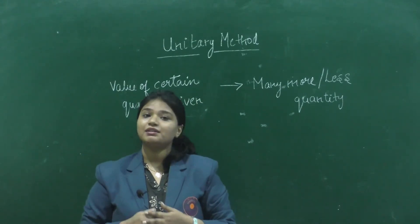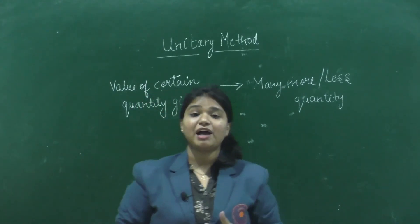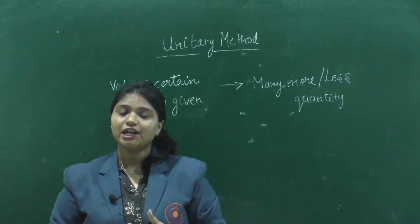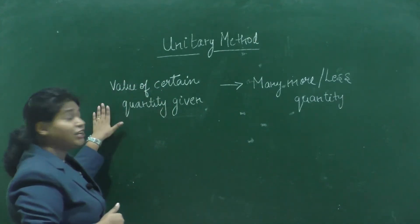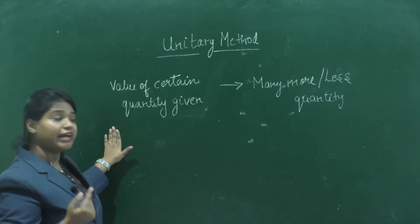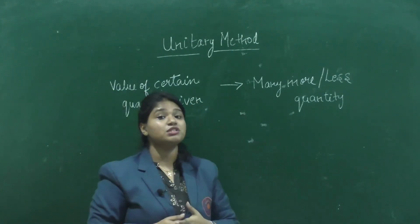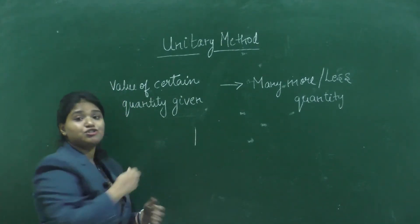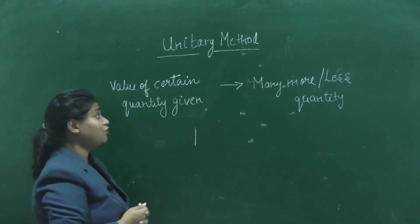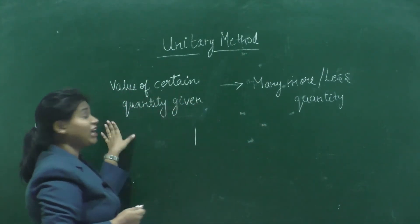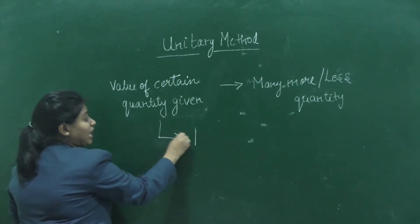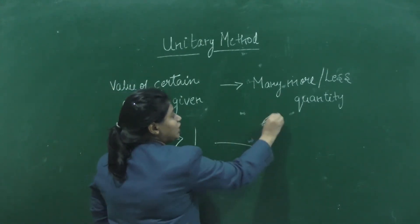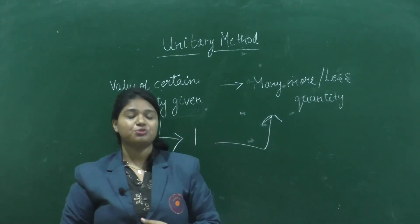Imagine visiting a stationery shop to buy three colored pens, but the shopkeeper tells you a pack of six colored pens costs rupees 30. To find the cost of three pens, we use the unitary method. Unitary means 'one' — we first find the value of one quantity, then use it to find the value of many more or fewer quantities.